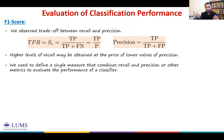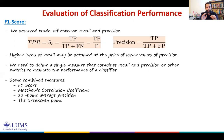There are different measures available in the literature. People have proposed different ways to combine recall and precision. We'll talk about four in this video: F1 score, Matthews correlation coefficient, 11-point average precision, and the break-even point. Let's start with F1 score.